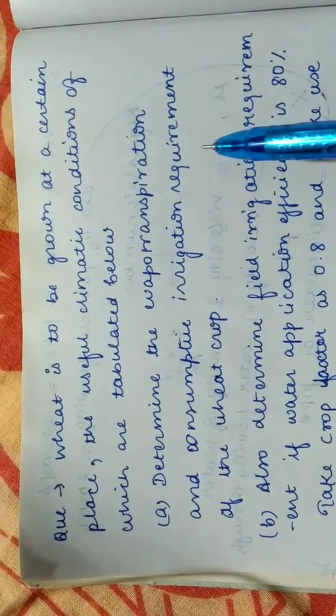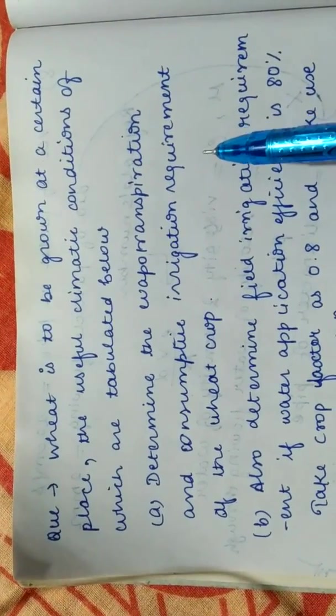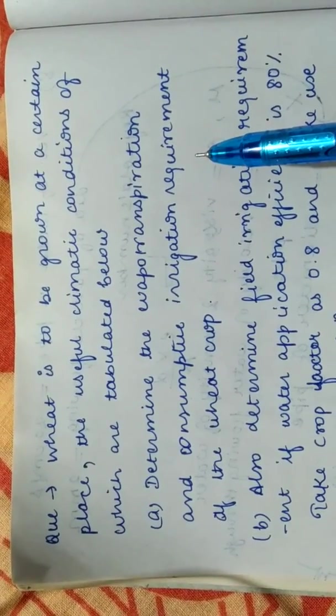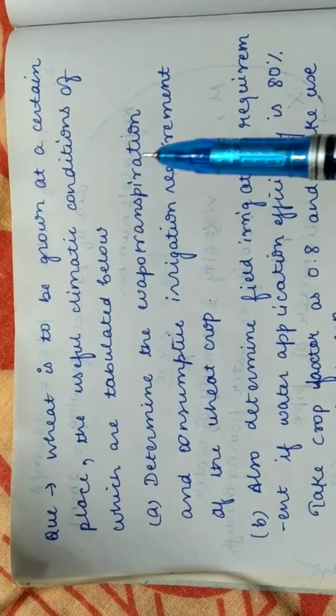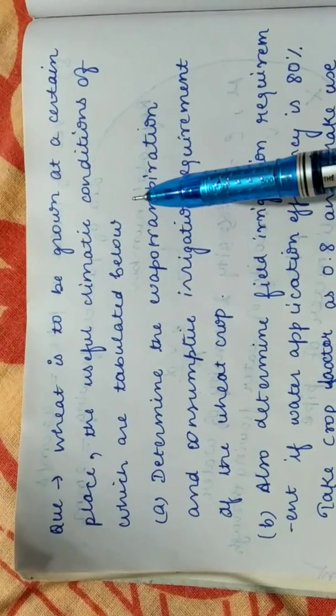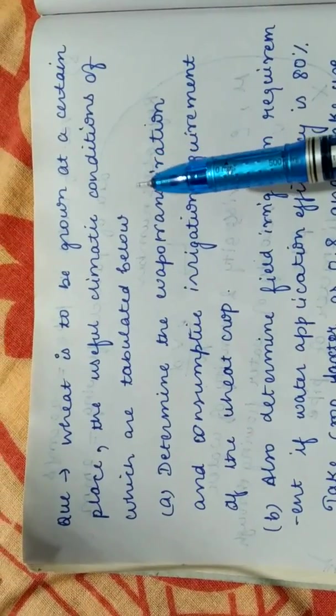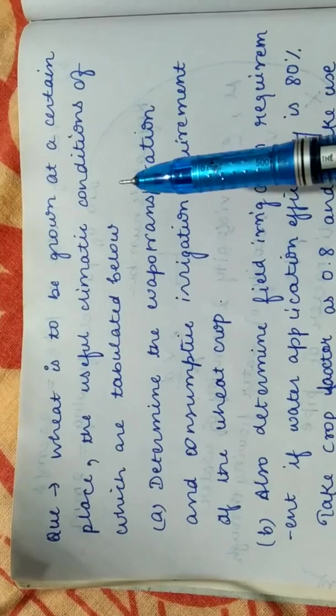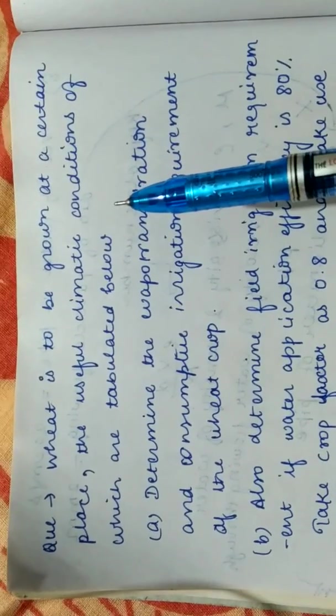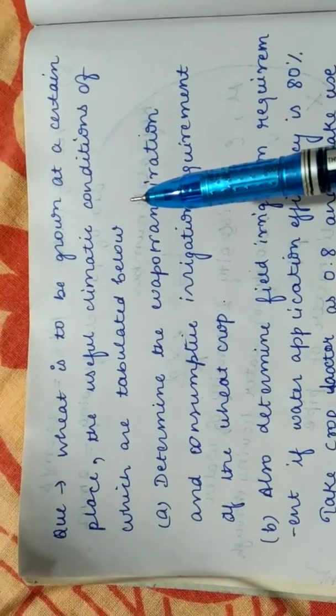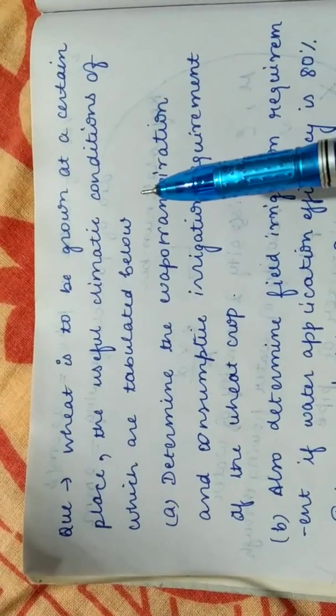Already we have discussed what is Blanek-Redel equation and how it is used to find evapotranspiration. So in this video, the question is wheat is to be grown in a certain place. For that particular place, we have the climatic data. The climatic data means temperature, sunshine hours, wind speed, and humidity.